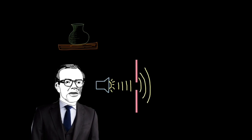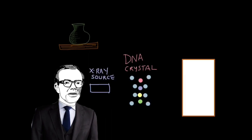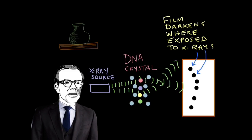If I fire X-rays at the tiny crystals of DNA, the X-rays diffract through the spaces between the atoms in the DNA molecule. When the X-rays reach the film, they cause it to darken. From the image created, I can determine the structure of DNA.